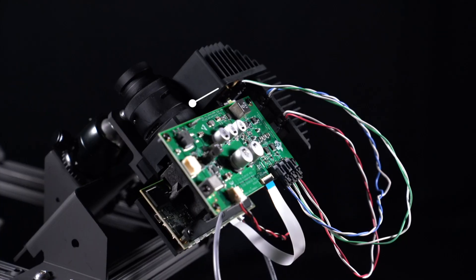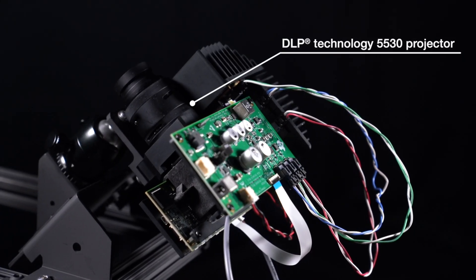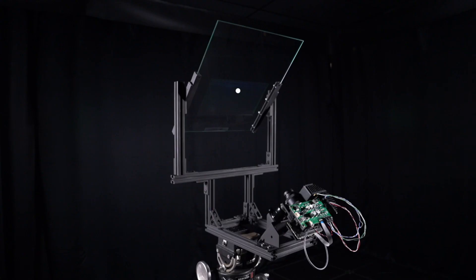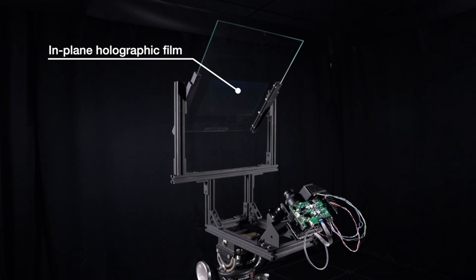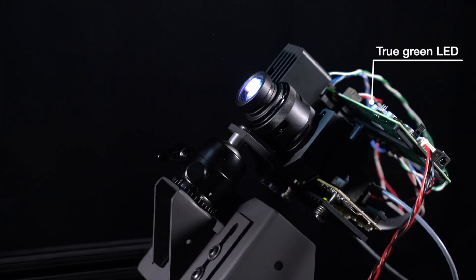The setup of the demo is as follows: A DLP 5530-based projector using LED illumination is used to illuminate an in-plane holographic film. A true green LED, as opposed to a converted green LED, is used to improve efficiency and brightness.